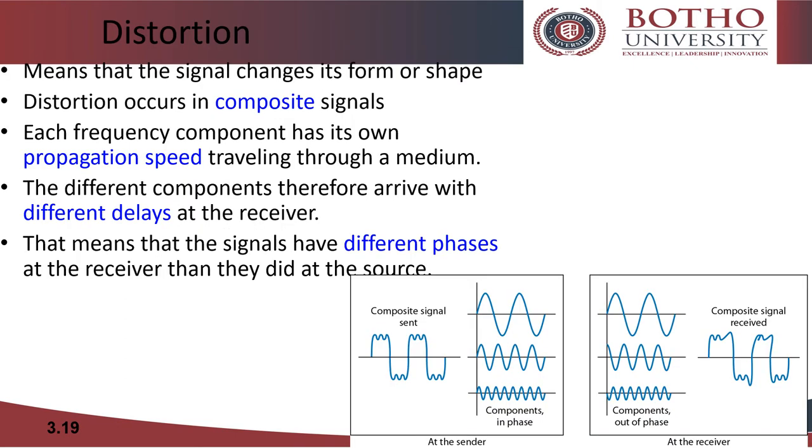Distortion means that the signal changes its form or shape. Distortion can occur in a composite signal made of different frequencies. Each signal component has its own propagation speed through a medium and therefore its own delay in arriving at the final destination. Differences in delay may create a difference in phase if the delay is not exactly the same as the period duration.